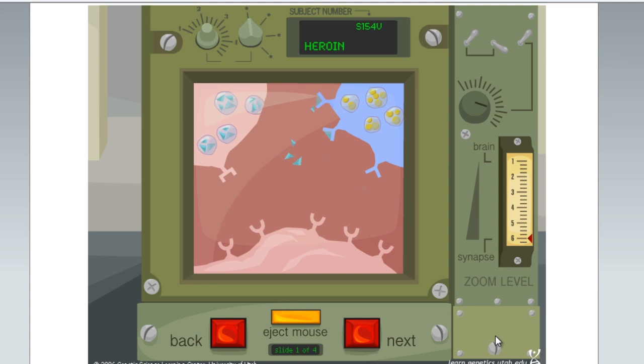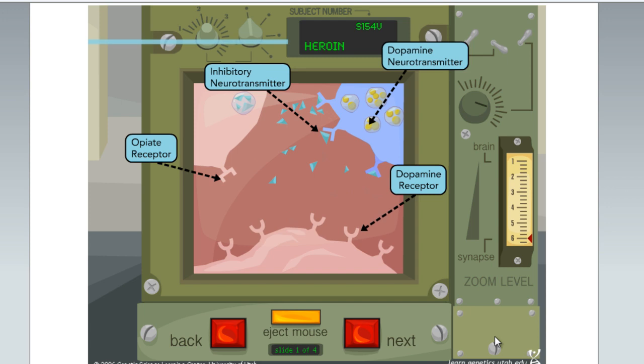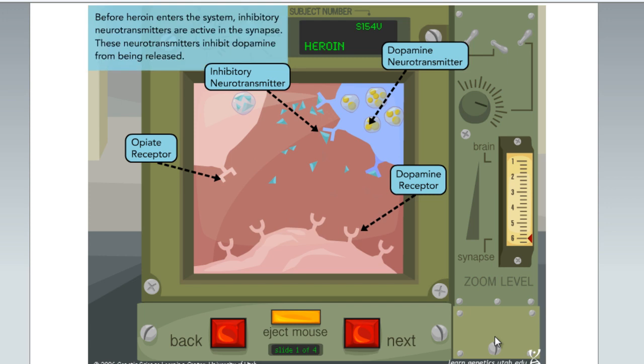Before heroin enters the system, inhibitory neurotransmitters are active in the synapse. These neurotransmitters inhibit dopamine from being released.